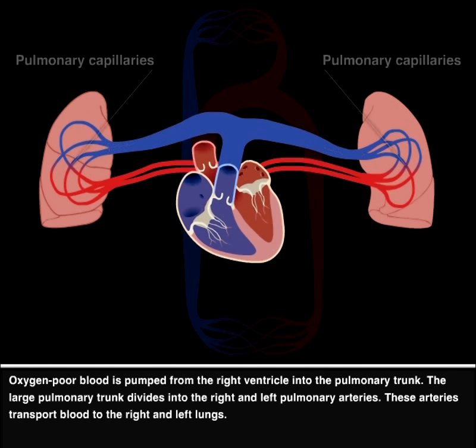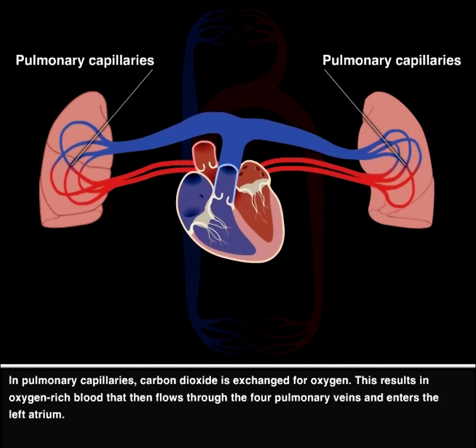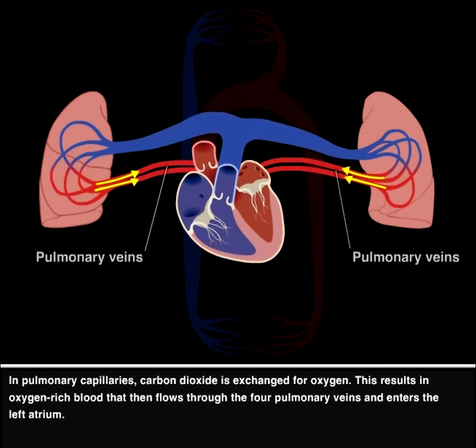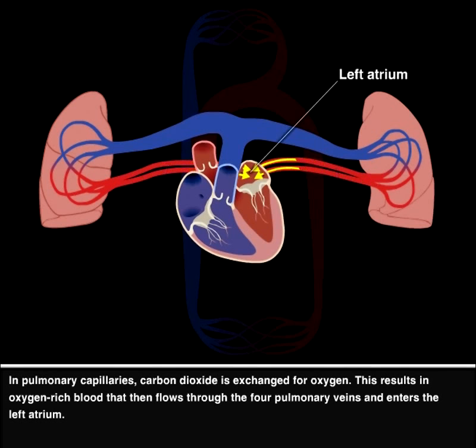In the pulmonary capillaries, carbon dioxide is exchanged for oxygen. This results in oxygen-rich blood that then flows through the four pulmonary veins and enters the left atrium.